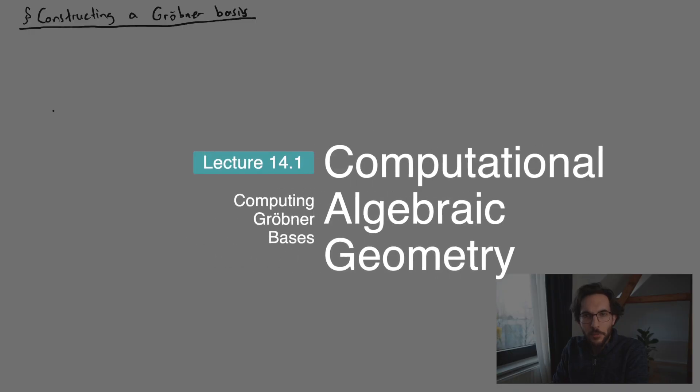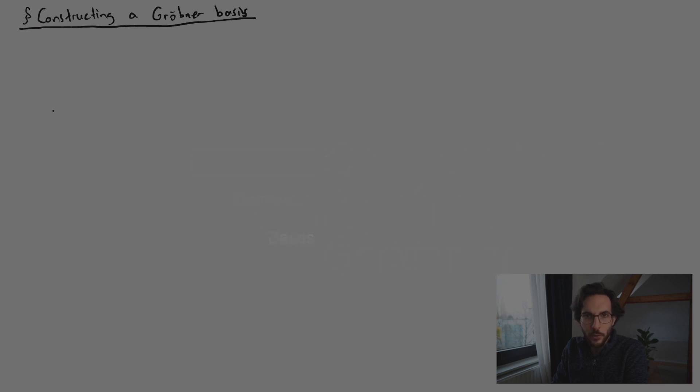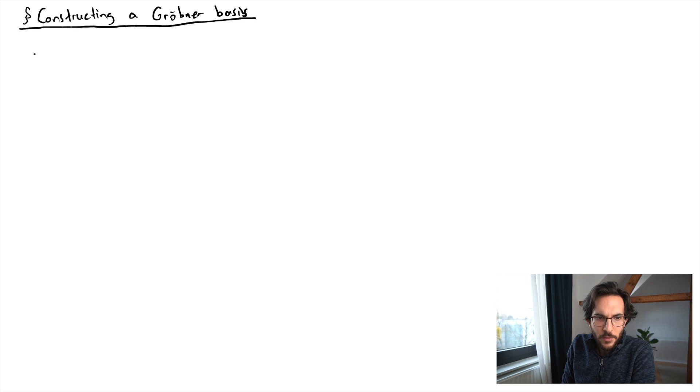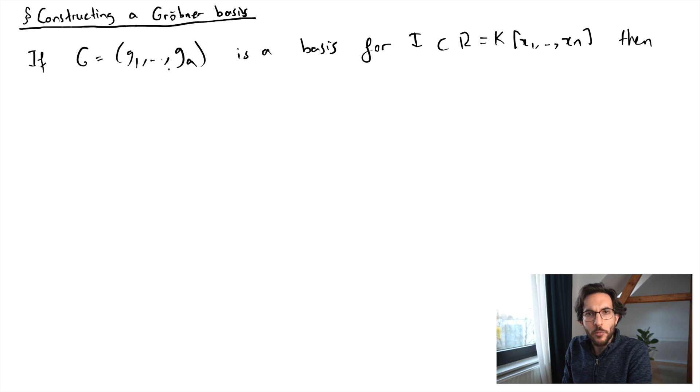Before we do anything formal let me briefly recall Buchberger's criterion for detecting a Gröbner basis. Remember, if I have a sequence of polynomials which is a basis for an ideal, then this sequence gives me a Gröbner basis if and only if all the s-polynomials have remainder zero.